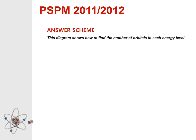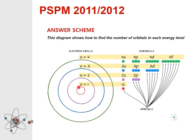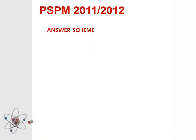This diagram shows how to find the number of orbitals in each energy level. This diagram also shows the values of quantum numbers for atomic orbitals.